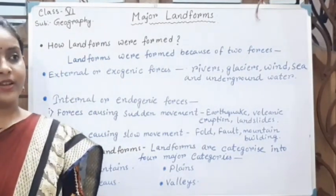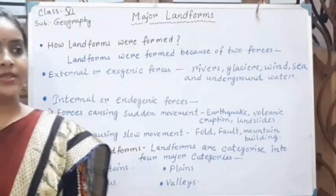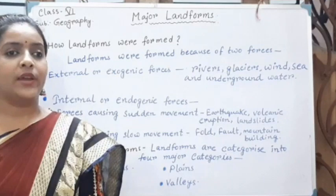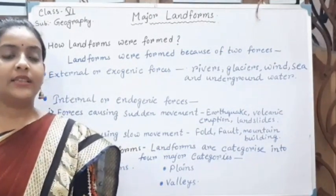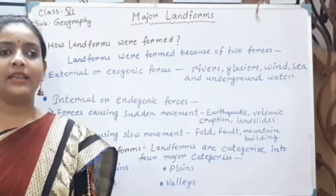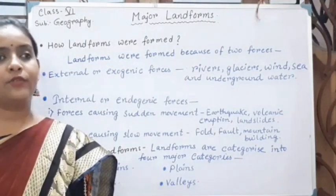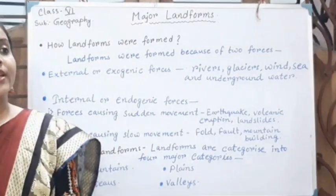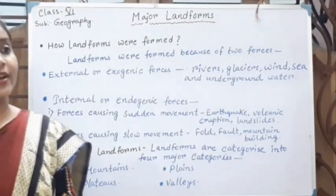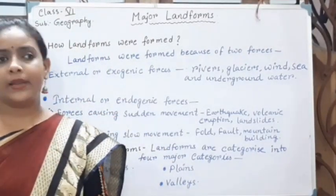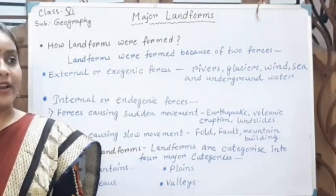On Earth's surface, or on the lithosphere, there are many forms of land. If you see your surroundings, it is plain everywhere because we are living in a plain region. If you go to Darjeeling, the landform is different. If you go to South India, the landform is also different. So you can see different kinds of landforms on the Earth's surface. Now, the question is: how were these landforms formed? These landforms are not built by any man.